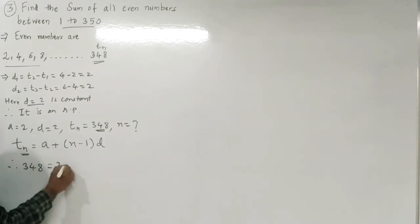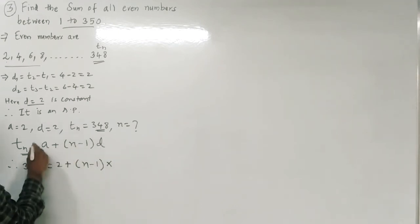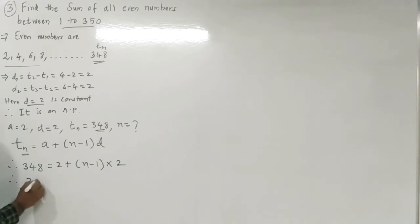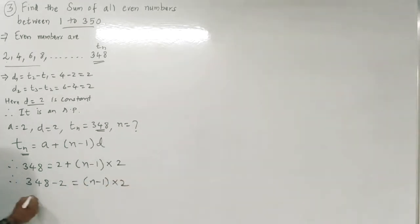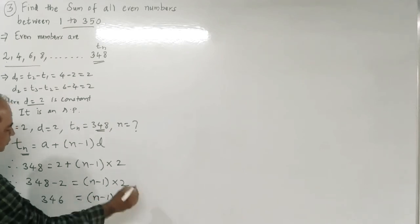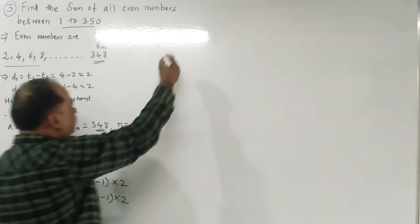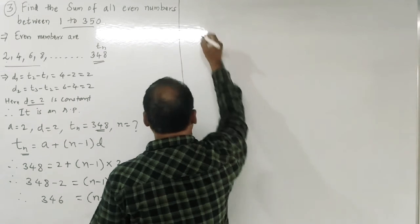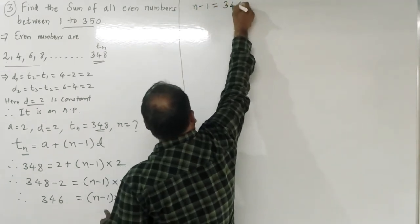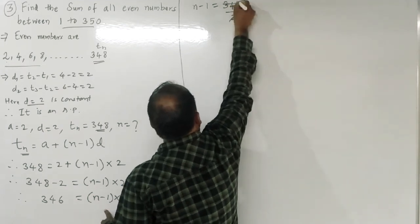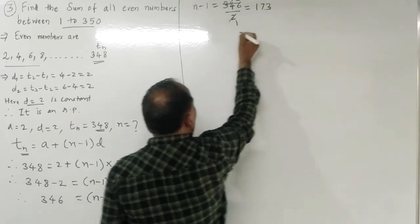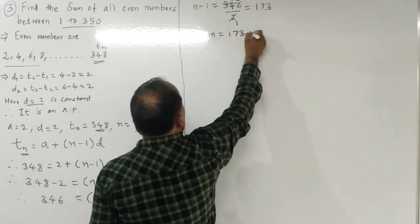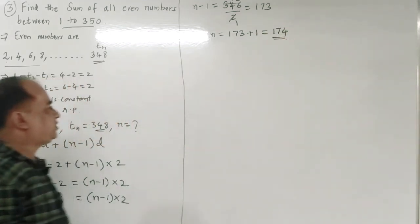Solving: 348 − 2 = (n−1)×2, so 346 = (n−1)×2, giving n−1 = 346/2 = 173. Therefore n = 173 + 1 = 174. So there are 174 even numbers between 1 and 350.